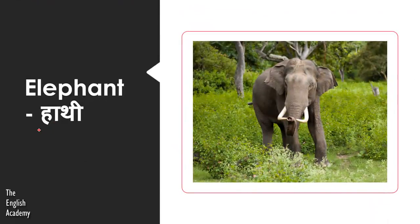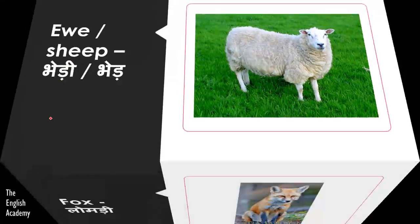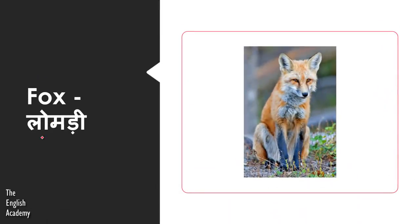The next animal is Hathi — Hathi is called Elephant in English. The next animal is Bheedi or Bheed, which is called Ewe or Sheep. The next animal is Lomdi, known as Fox.